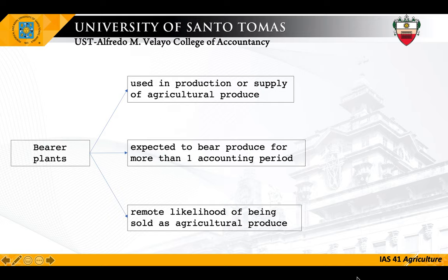It is not impossible that other than mango trees, there are other trees growing in the plantation — for example, Mahogany or Nara trees. Since these trees do not bear mangoes, they are not classified as bearer plants. If the company recognizes these trees as assets, they may be reported as freestanding trees, which are classified as biological assets, not bearer plants.